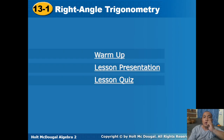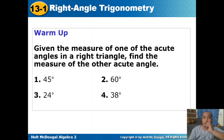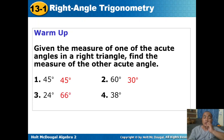Hello, Grade 9 students. Our topic for today is all about right angle trigonometry. Let us first have a warm-up. Given the measure of one of the acute angles in a right triangle, find the measure of the other acute angle. Number one: 45 degrees — the other acute angle is also 45 degrees, since 90 minus 45 is 45. Number two: 90 minus 60 is 30 degrees. Number three: 90 minus 24 is 66 degrees. Number four: 90 minus 38 is 52 degrees.